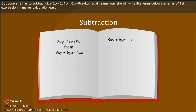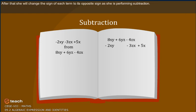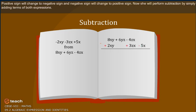Again, the same way she will write like terms below the terms of the first expression. It makes calculation easy. After that, she will change the sign of each term to its opposite sign, as she is performing subtraction. Positive sign will change to negative sign, and negative sign will change to positive sign. Now she will perform subtraction by simply adding the terms of both expressions.